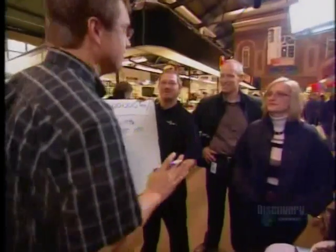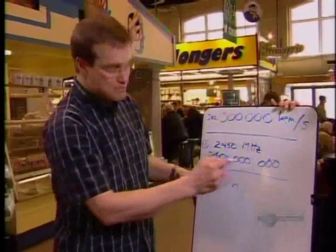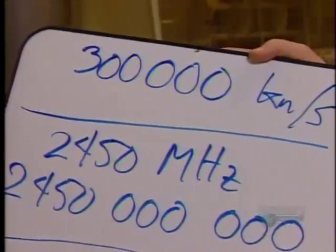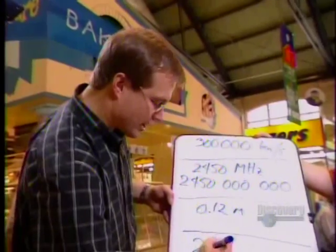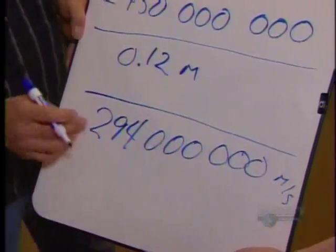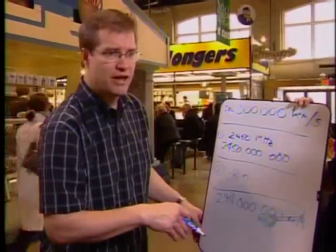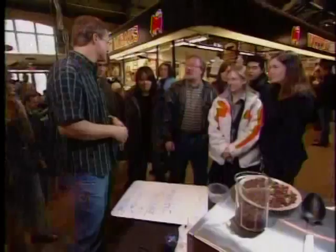So our chocolate chip measurement gave us a wavelength of 12 centimeters, and we've got 2 billion, 450 million of those waves every second. If we multiply 0.12 meters times 2,450 megahertz, we end up with 294 million meters per second. We divide by 1,000 to convert to kilometers, and what's the number we measured? 294,000 kilometers per second. And what's the speed of light? 300,000 kilometers per second. That's pretty darn close — not bad for chocolate chips. It's chocolate science!